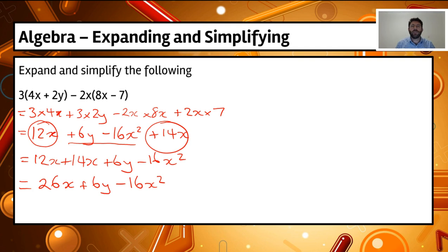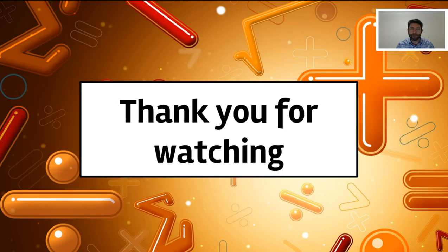By expanding out our brackets and then simplifying, we're getting that larger expression and breaking it down into its simplest form. All we need to look for are those rules in expanding using the distributive law, collecting like terms, adding or subtracting them together, and then simplifying. Thank you for watching. Hopefully you got something out of that, and we'll see you next time.